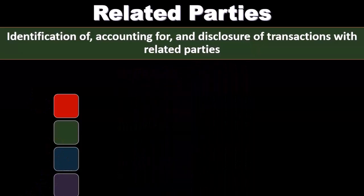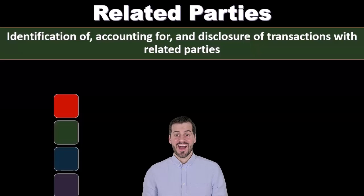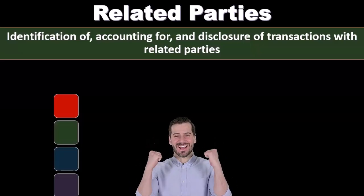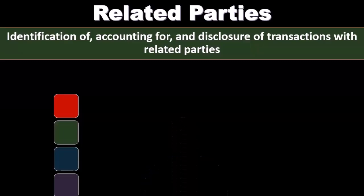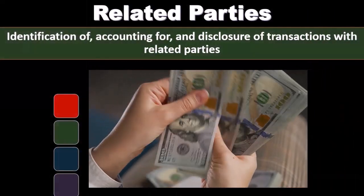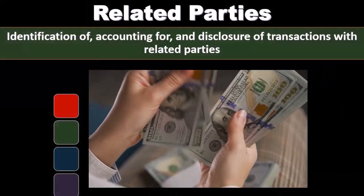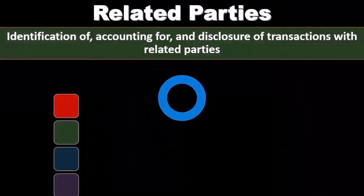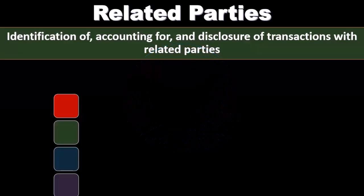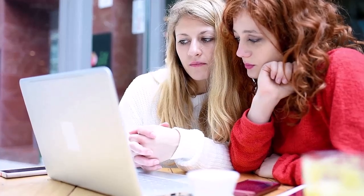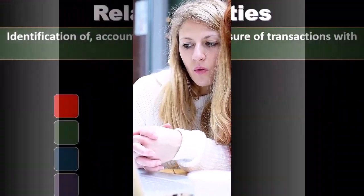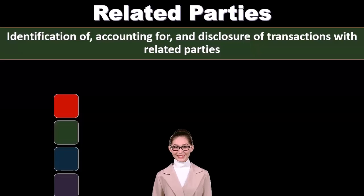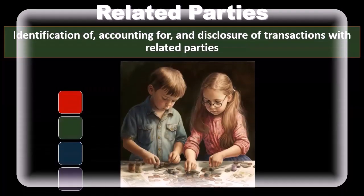An entity is related to a reporting entity if, among other circumstances, it is a parent, subsidiary, fellow subsidiary, associate, or joint venture. Just like with individuals who are related — such as siblings or family members — transactions between those related parties are not going to follow normal, market-type behavior.